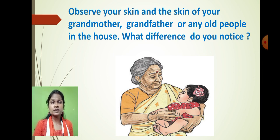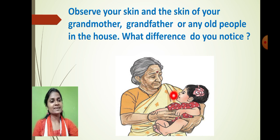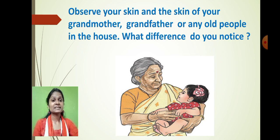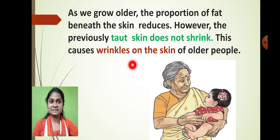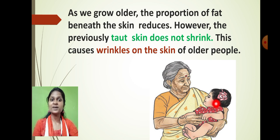Have you ever observed your skin and the skin of your grandmother? Here it is a grandmother — look at the skin of the grandmother — and here it is a baby. What difference do you notice? Just observe the skin of the grandmother and the skin of the baby. We see wrinkles on the skin. The wrinkles on the skin basically occur in older people. Our skin ages as the person becomes old. In the case of younger people, the skin is very tight, so it doesn't shrink immediately.